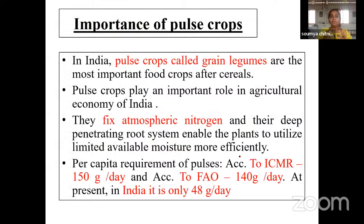What is the importance of pulses? Pulse crops have a nitrogen fixation characteristic which we don't find in most other crops — cereals and other categories do not fix nitrogen, except soybean. We call them grain legumes. These are the most important food crops after cereals in our country, and pulse crops play an important role in the agricultural economy as well. India is the highest producer of pulses in the world.